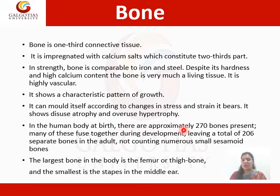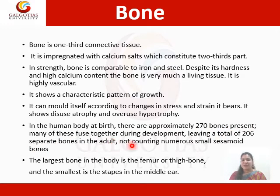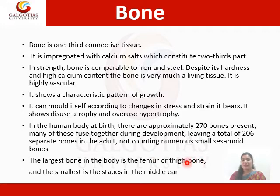If we use a bone for a very long time with overuse, then it also shows hypertrophy. In the human body, at birth there are approximately 270 bones present. Many of these fuse together during development, leaving a total of 206 separate bones in adults, not counting numerous small sesamoid bones.